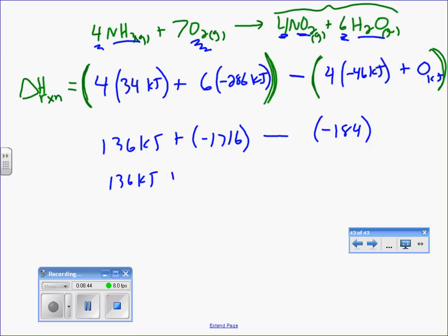So, just changing all the signs, I end up with 136 kilojoules minus 1716 kilojoules plus 184 gives me my standard enthalpy of the reaction. So, I have 136 minus 1716 plus 184 gives me an answer of negative 1396 which is the correct answer.